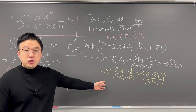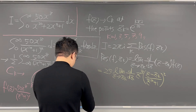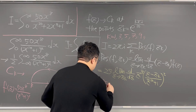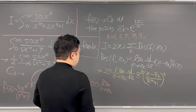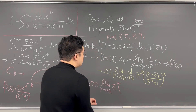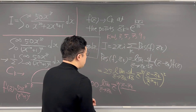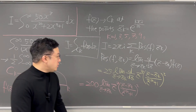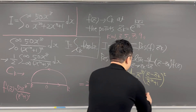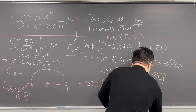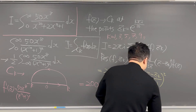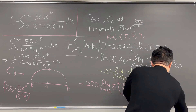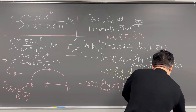So we can represent this into two terms. The second term is 50 times the limit as Z goes to Z_k of Z to the power of 7 times Z minus Z_k over Z to the power of 10 plus 1, squared. And the second term is plus 50 times the limit as Z goes to Z_k of Z to the power of 8 times Z minus Z_k over Z to the power of 10 plus 1.